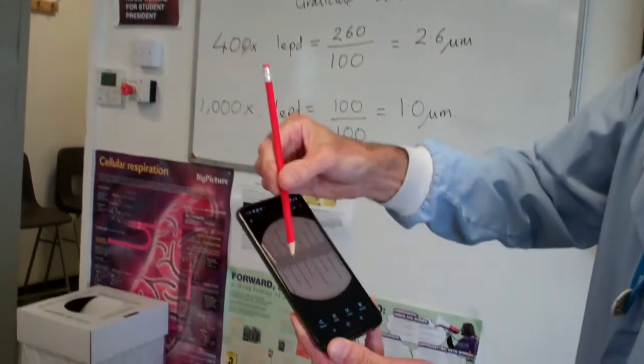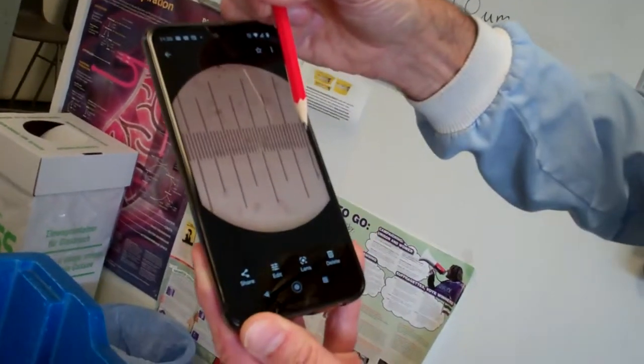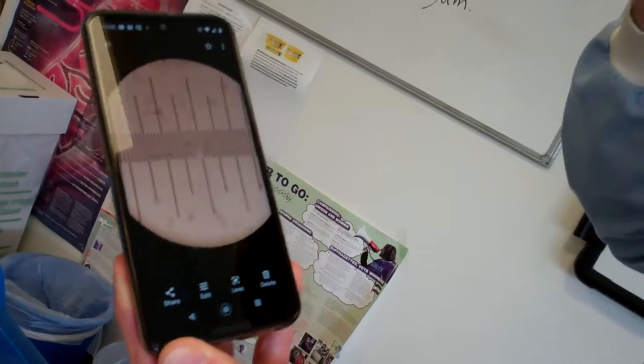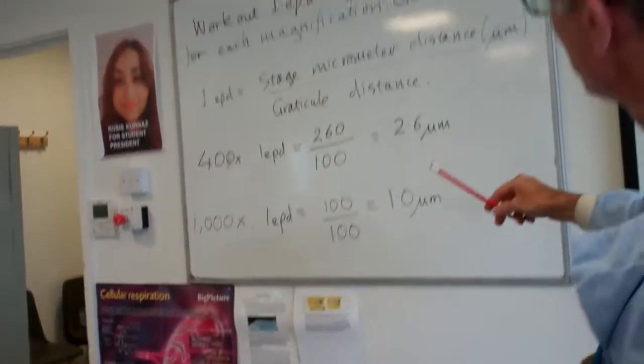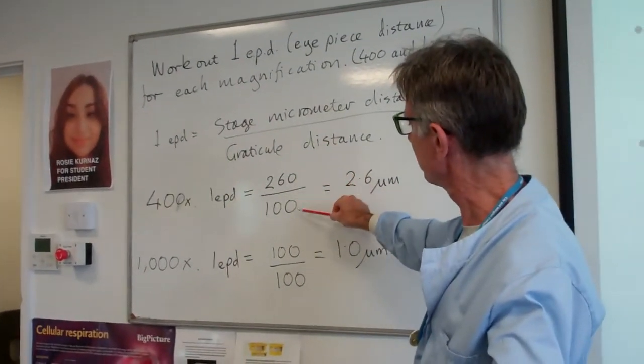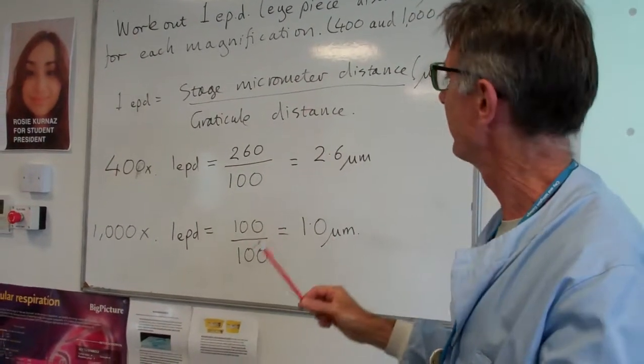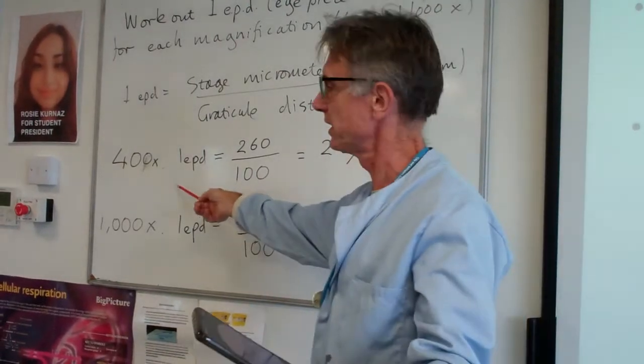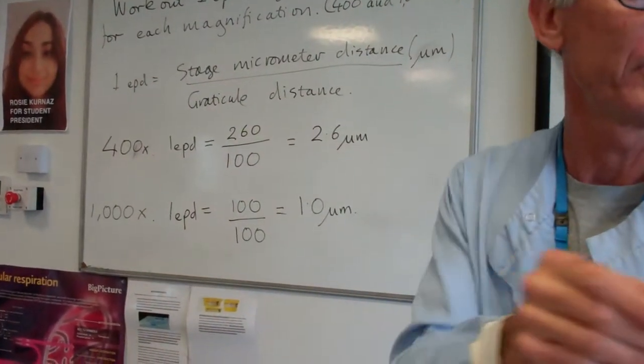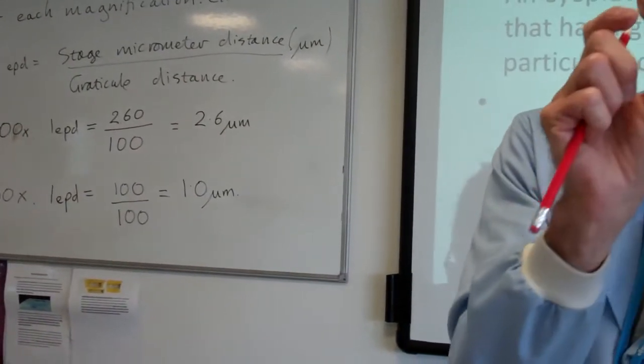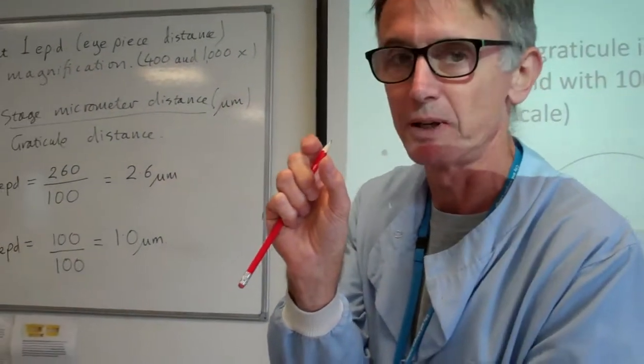I know that 0 to 10 is actually 100 divisions on the eyepiece. So this is simple math: 260 divided by 100 equals 2.6 micrometers. What that means is, at 400 times magnification, when I'm looking down this, each little division is 2.6 micrometers.